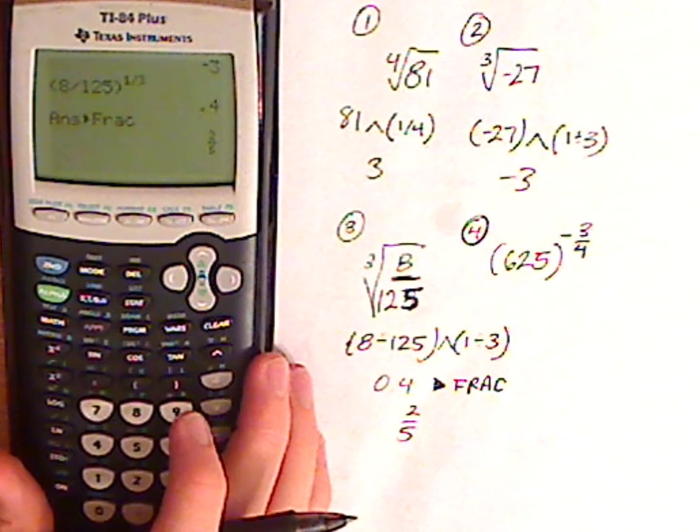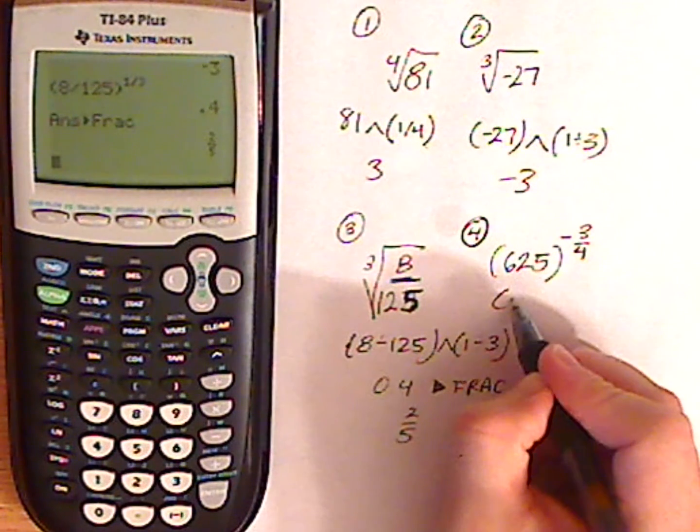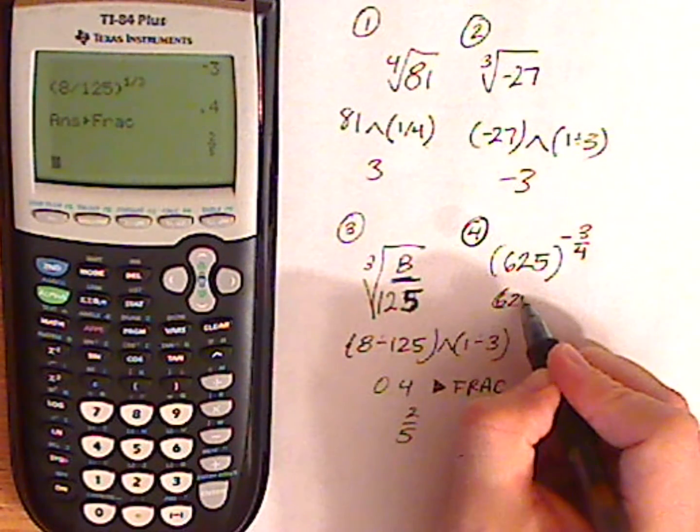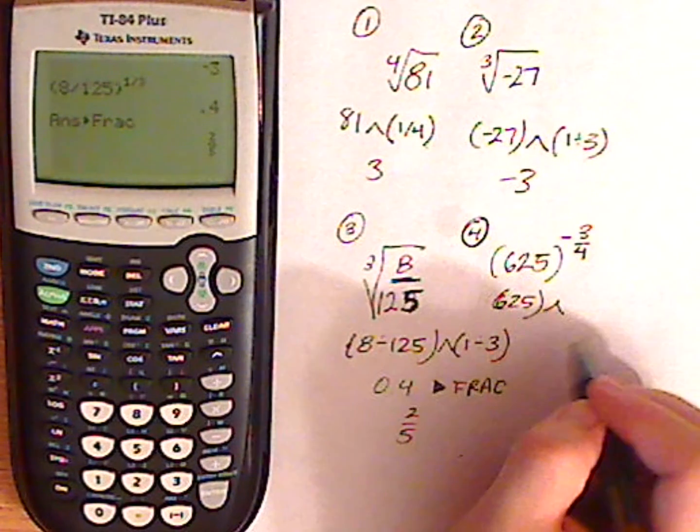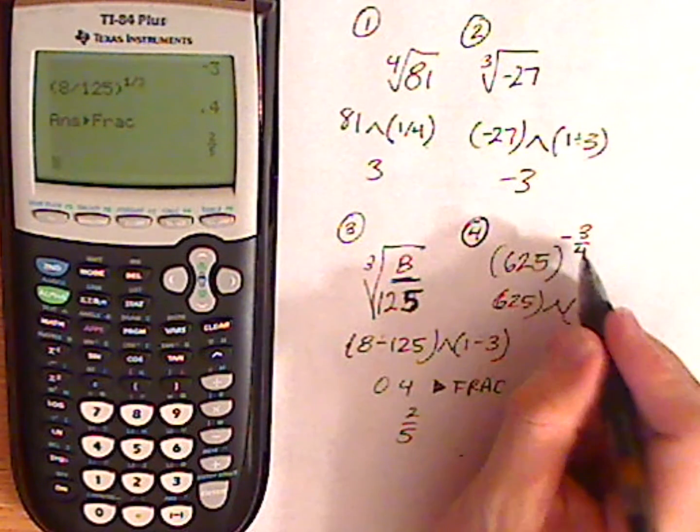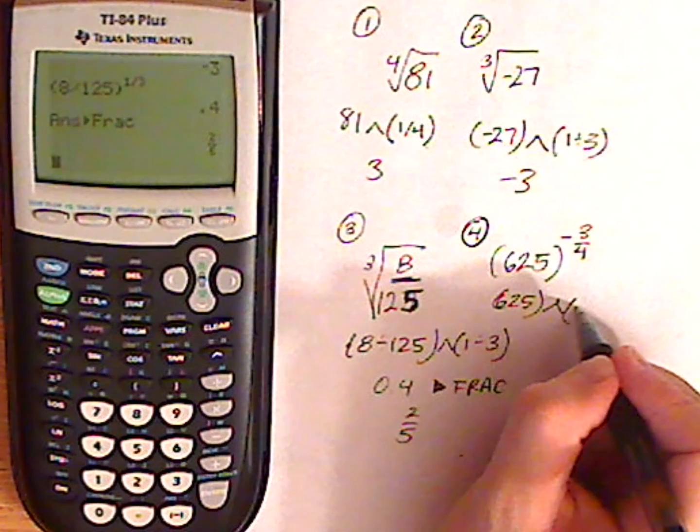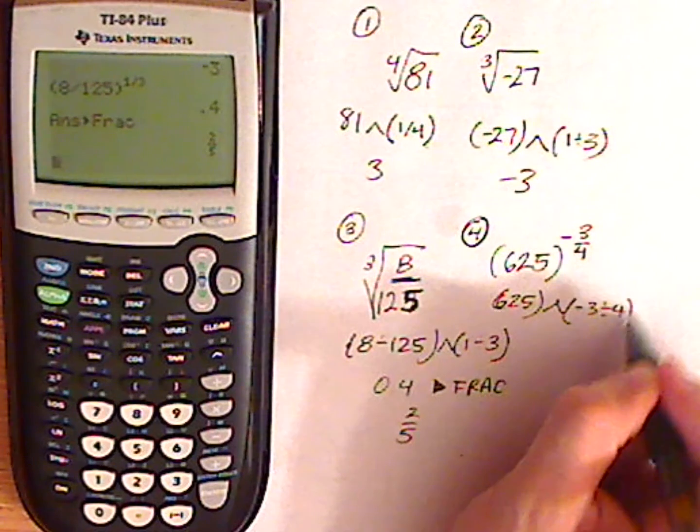So exit out of that. Now I'm going to type in the last one. 625. I'm going to write it by hand first. A little up arrow again. Carat. And then as the power, I'm going to type in negative 3 divided by 4.